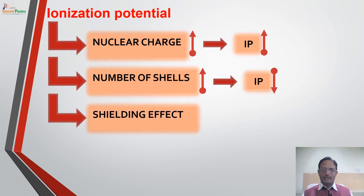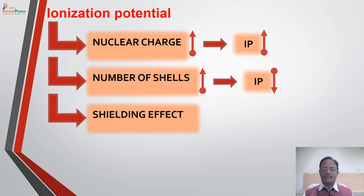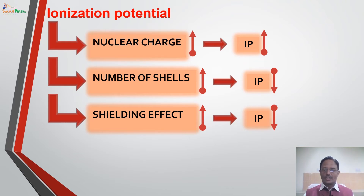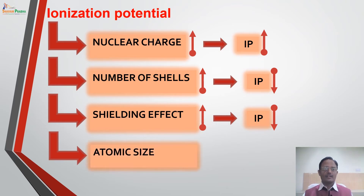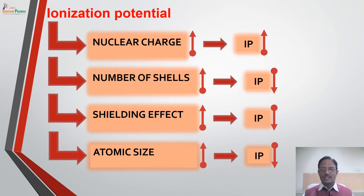The third factor is the shielding effect. Shielding effect is the reduction in the force of attraction between the outermost electron and the nucleus because of the inner electrons present between the outer electron and the nucleus. This is also called the screening effect. The function of shielding effect is to reduce the nuclear force of attraction — if shielding effect increases, ionization potential decreases. The fourth factor is atomic size. If the atom is small in size, the force of attraction between nucleus and electron is large, making removal of electron difficult. So if atomic size increases, ionization potential decreases — an inverse proportion exists between the two.